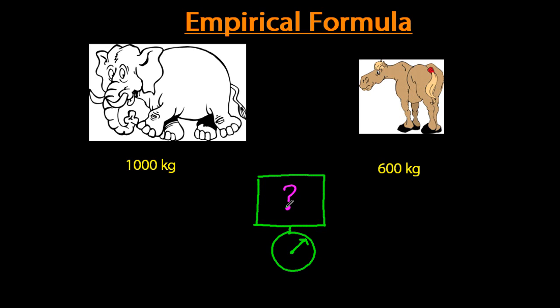This is analogous to the empirical formula calculations in a bit. If 1,600 kilograms, you must have one elephant and one horse. That's unambiguous.